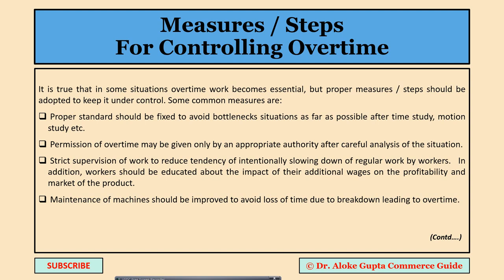Now, what measures or steps should be taken for controlling overtime? Since overtime has certain demerits, we should not normally allow workers to work overtime. The first measure is to fix proper standards to avoid bottlenecks — through time study, motion study, etc. Proper planning helps determine how many orders can be supplied within normal working hours and normal infrastructure limitations, so overtime does not become a regular feature.